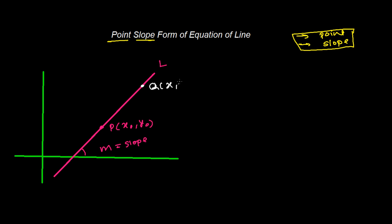Now I'm going to imagine another point Q, which is (x, y). Here (x, y) is a point satisfying the equation of line L — meaning whenever we put the value of x and y into the equation of line L, it satisfies the equation. So (x, y) is a general point for line L: any value of x and y that we plug in will satisfy the equation.